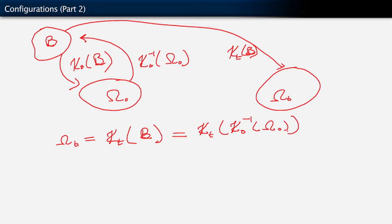What we've done is construct a mapping from the reference configuration to this configuration omega sub t. And this mapping is simply kappa sub t composed with kappa nought inverse of omega nought.